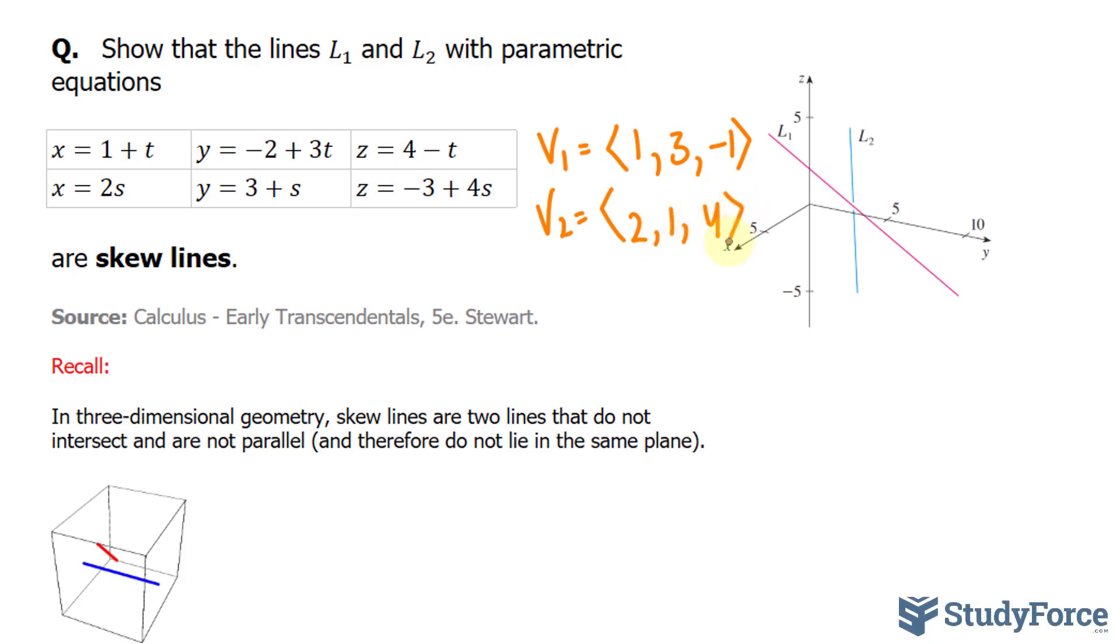You can tell that the lines are not parallel because the corresponding vectors are not proportional. They would be considered proportional if you can multiply one by a scalar quantity and get the other.